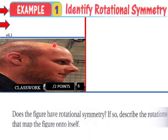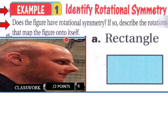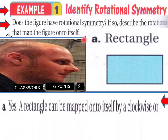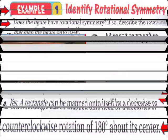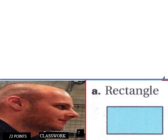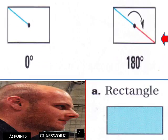Example one: identify rotational symmetry. Does the figure have rotational symmetry? If so, describe rotations that map the figure onto itself. We have a rectangle — yes, a rectangle can be mapped onto itself by a clockwise or counterclockwise rotation of 180 degrees about its center. This corner would end up over here at 180 degrees.